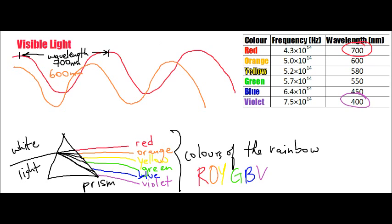And let's take the shortest one being violet. So violet wavelength would be the shortest of all the wavelengths, measuring at about 400 nanometers.